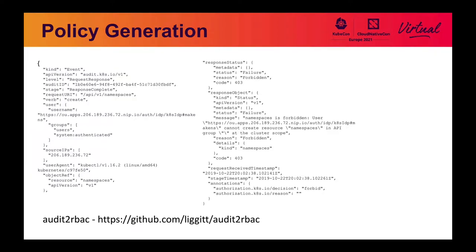Finally, policy generation. Audit-to-RBAC is a great tool written by Jordan Liggett. When you get your error messages, they don't give you enough information — you need something machine-readable. If you look at the event log, you can see the verb that was created, the request API, what was actually requested, and the user and groups that were requested to do it. So always enable your audit API. You try something, you see it fails, tell this tool to look at your logs, and it'll generate a policy for you.